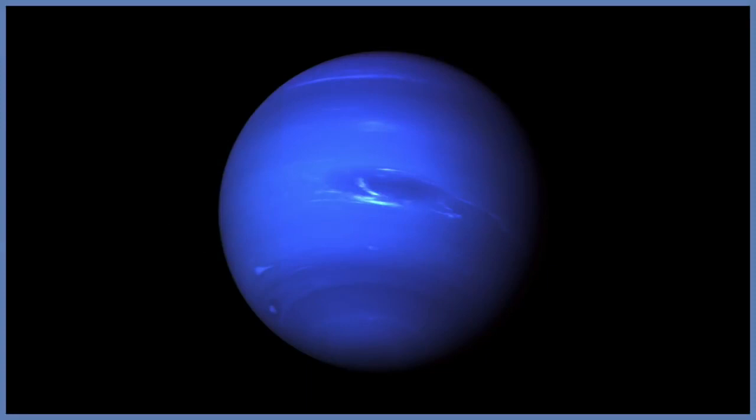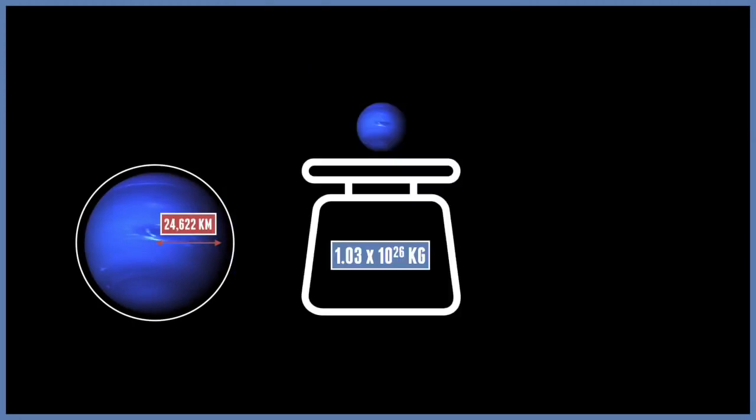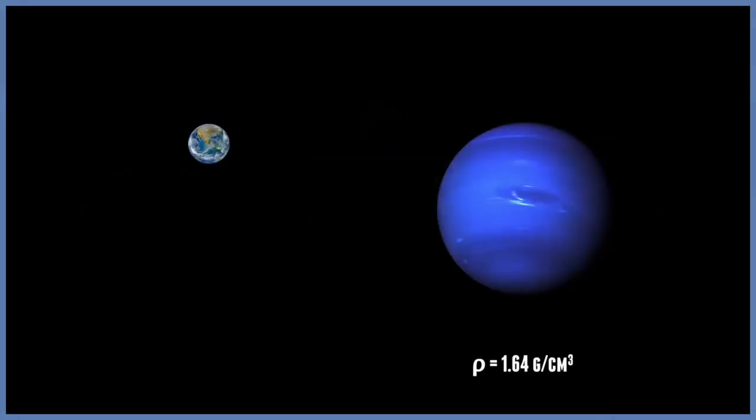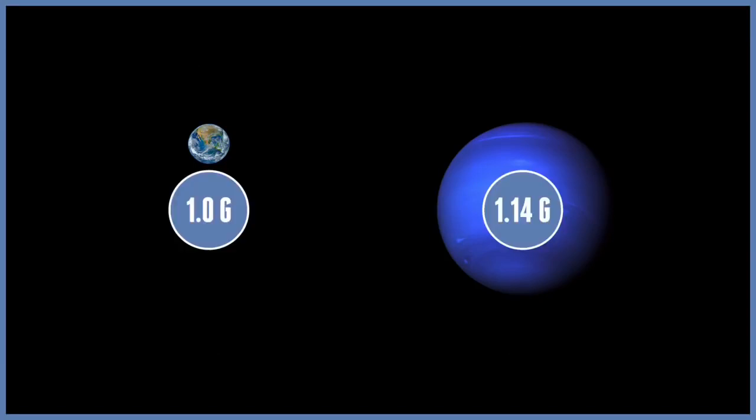And finally, we come to the furthest planet from the Sun, Neptune. Sorry about that Pluto. Neptune is just under 25,000 kilometers, making it the fourth largest planet. It has a mass of 1.03 times 10 to the 26 kilograms. And again, it's a very similar size to Uranus. Neptune is a very similar planet to Uranus, not only in mass and size, but also in density. But, it does have a higher gravity, at 11.15 meters per second squared. This means that it actually goes higher than Earth, at 1.14 G.